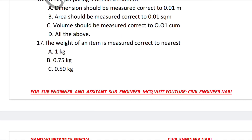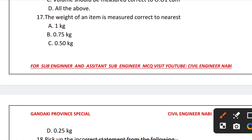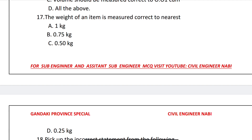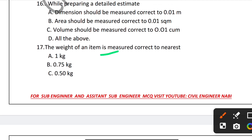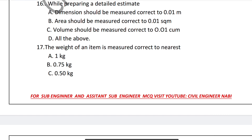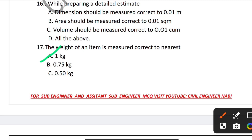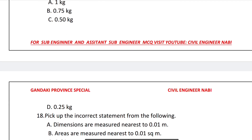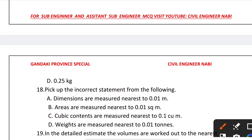Question 17: The weight of an item is measured to the nearest what unit? The weight is measured to the nearest kilogram (kg). The correct answer is kg.